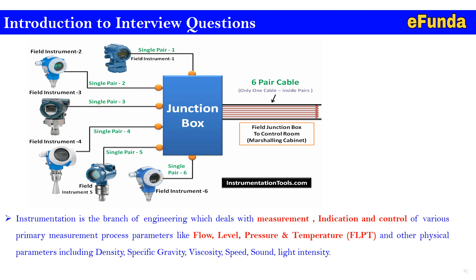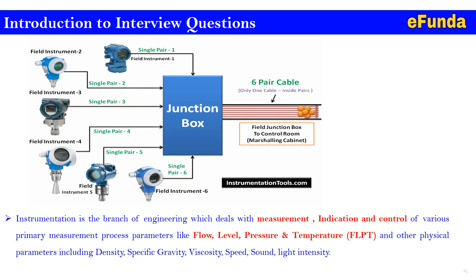Instrumentation is a branch of engineering which deals with measurement, indication, and control of various primary process parameters like flow, level, pressure, and temperature — that is FLPT — and other physical parameters including density, specific gravity, viscosity, speed, sound, light intensity, etc. The type of instrument needed for such measurement, for ensuring better quality and efficiency of the end product, is decided by an instrumentation engineer. Hence the role of an instrumentation engineer is very critical from the point of view of design and safety of the plant or processing unit.